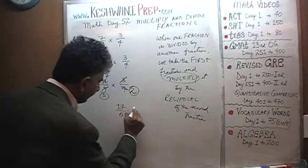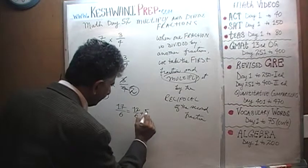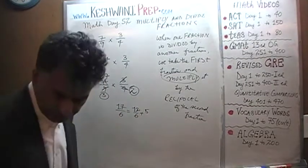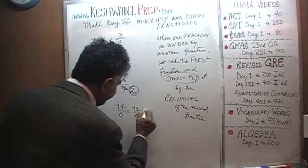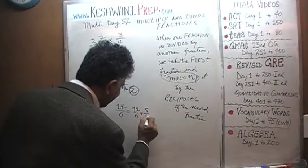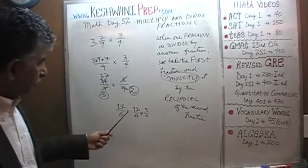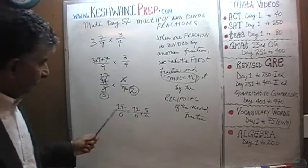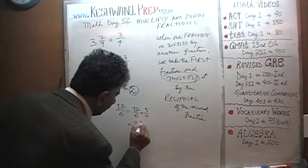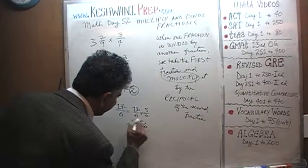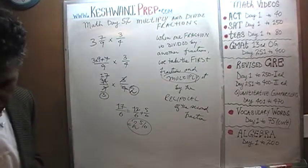17 over 6 is the same as 12 over 6 plus 5 over 6. Since 12 over 6 is 2, the final answer boils down to 2 and 5/6.